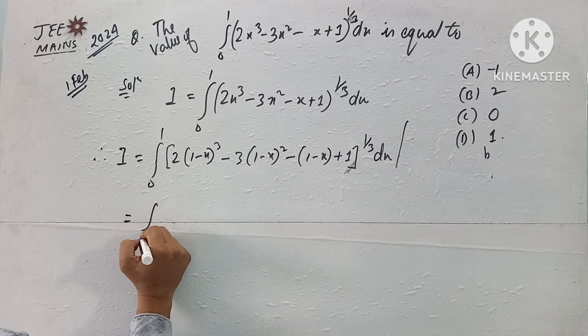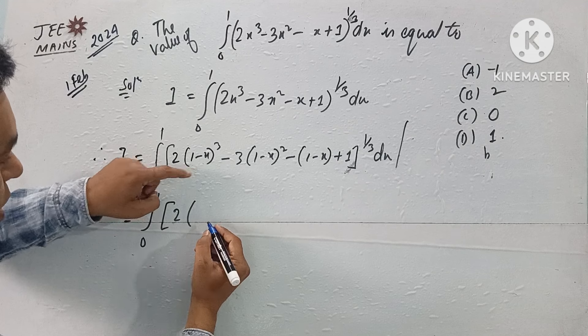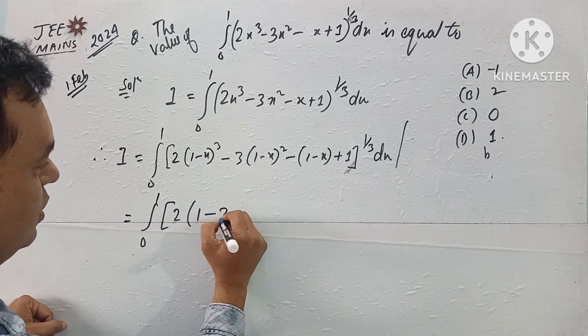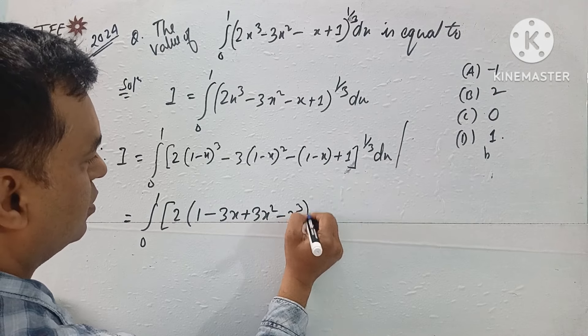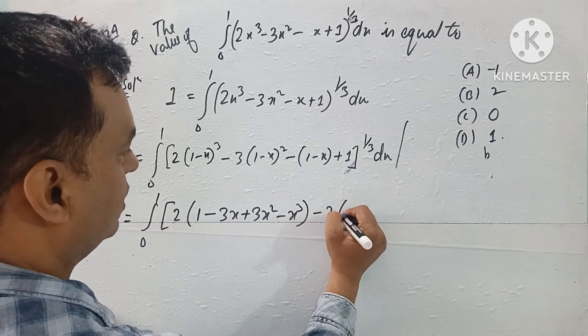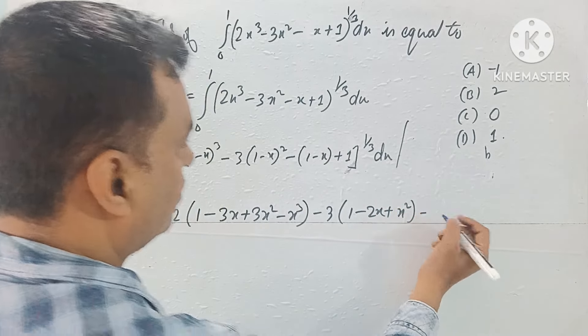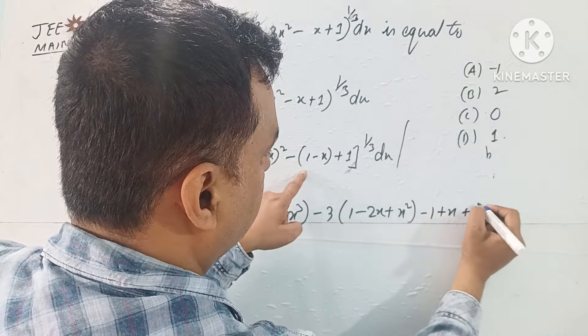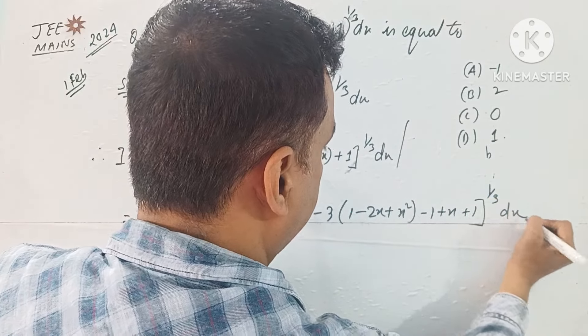This equals integral 0 to 1 of [2(1 - 3x + 3x² - x³) - 3(1 - 2x + x²) - 1 + x + 1]^(1/3) dx.